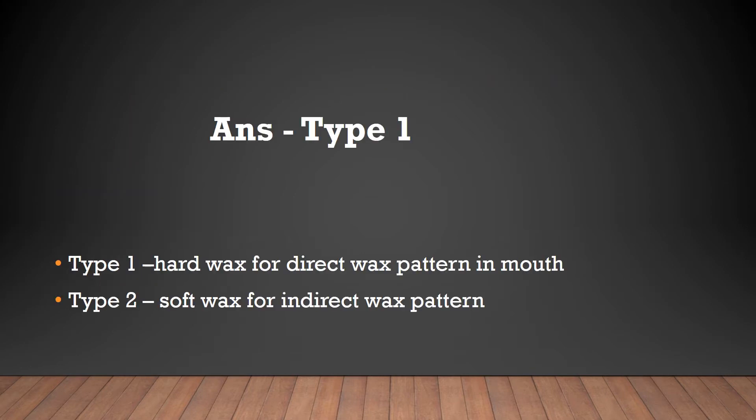Question: Which inlay wax is most commonly used for the direct technique? Options: type 1, type 2, type 3, type 4. Answer: Type 1. Type 1 is a hard wax used for direct wax patterns in the mouth. Type 2 is a soft wax used for indirect wax patterns.